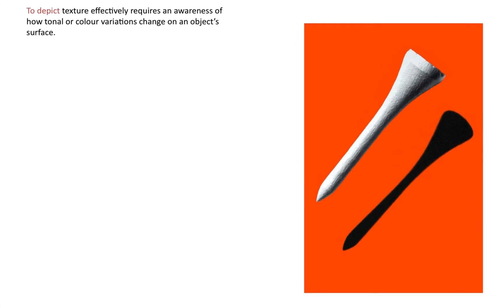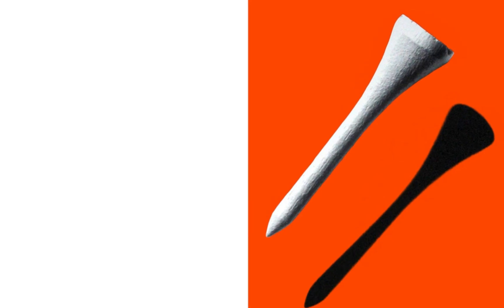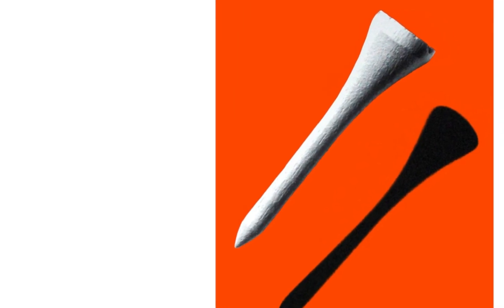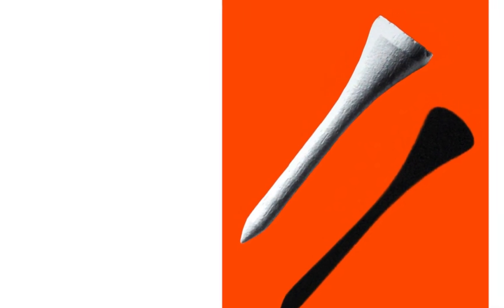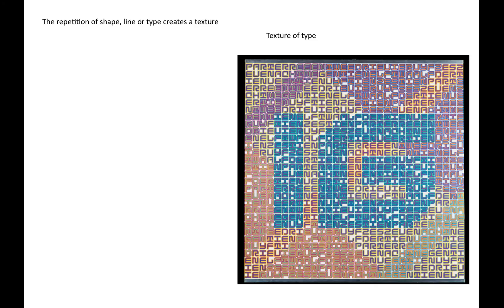To depict texture effectively requires an awareness of how tonal or colour variations change on an object's surface. The repetition of shape, line or type creates a texture.